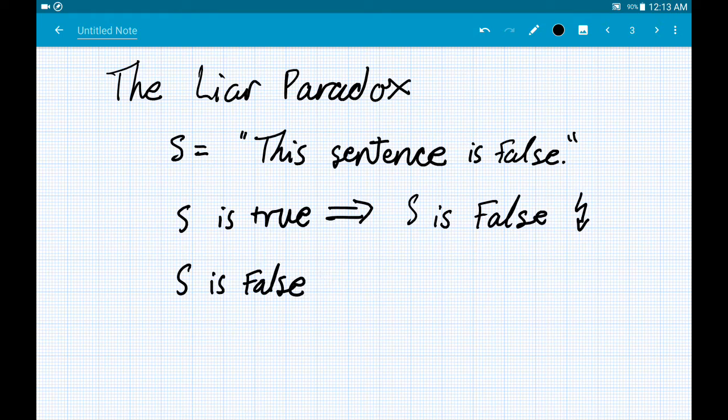But let's scrutinize that a little bit. Well, if S is false, and S just says that it's false, then it must be right about that. So that means S is true, and again, we have a contradiction.